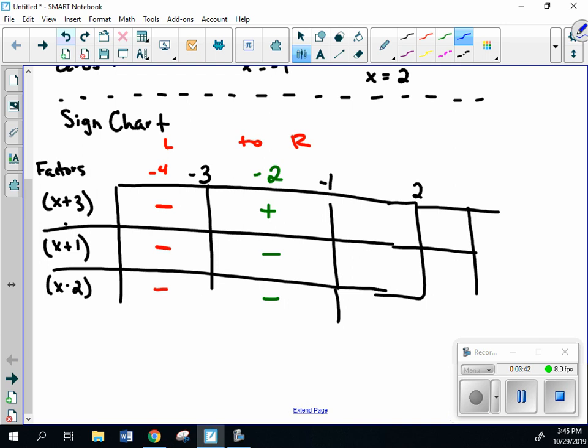Now picking a number between negative 1 and 2, I'm going to go with 0. So I have a positive, positive, negative. And then I need one more number. I need it to the right of 2, so I'm going to pick 3. So I get a positive, positive, positive.